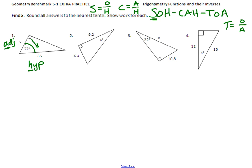So we just have the A and the H. I look over in my SOHCAHTOA and here's my A and my H, so it's cosine. So I have cosine of an angle, the angle happens to be 77 degrees, equals the adjacent side over the hypotenuse.